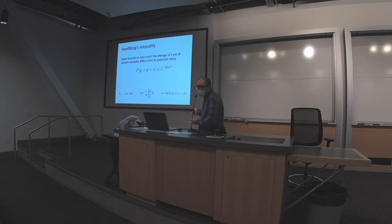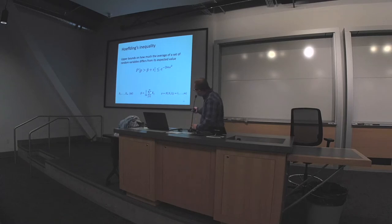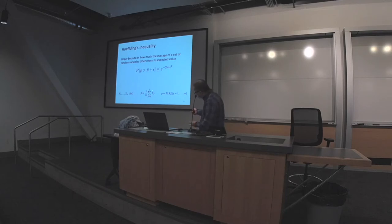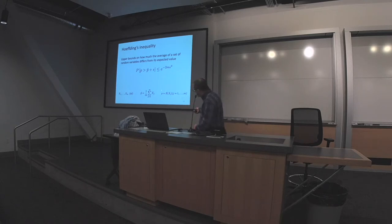P-bar, the average of these random variables, is an empirical estimate of the true expectation or true mean. But be careful — P-bar is still a random variable. Why? Because it is the summation over a set of other random variables. In other words, it's a function of random variables, and a function of a random variable is another random variable. So P-bar is a random estimate of some ground truth quantity, which is the mean of each random variable.